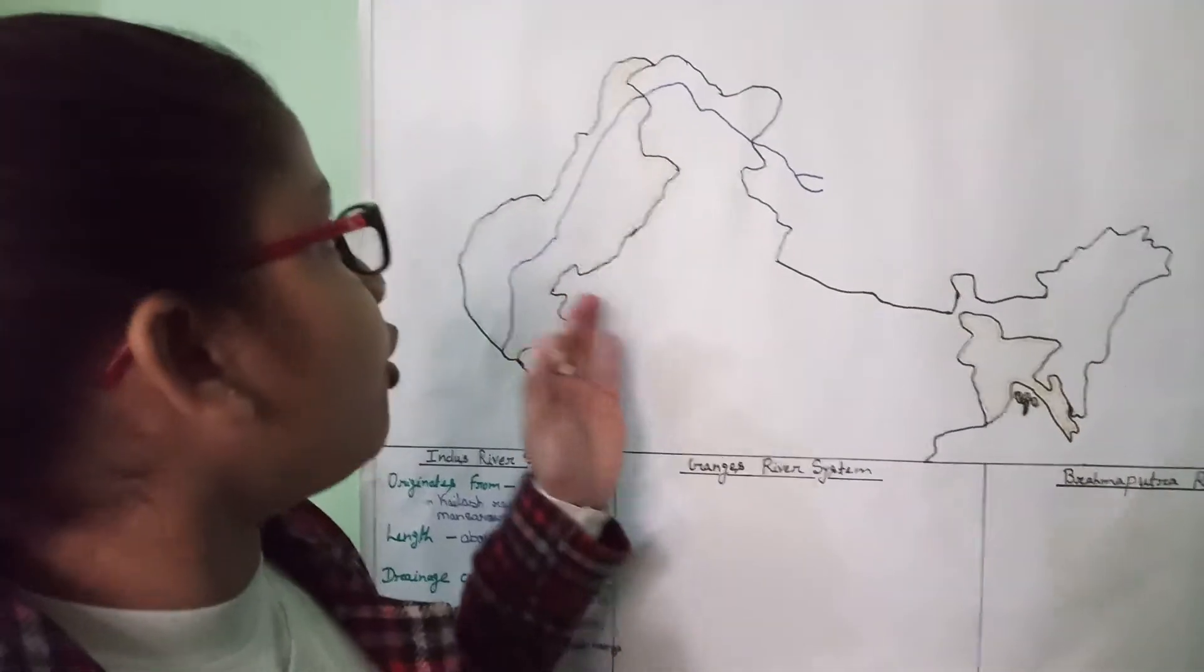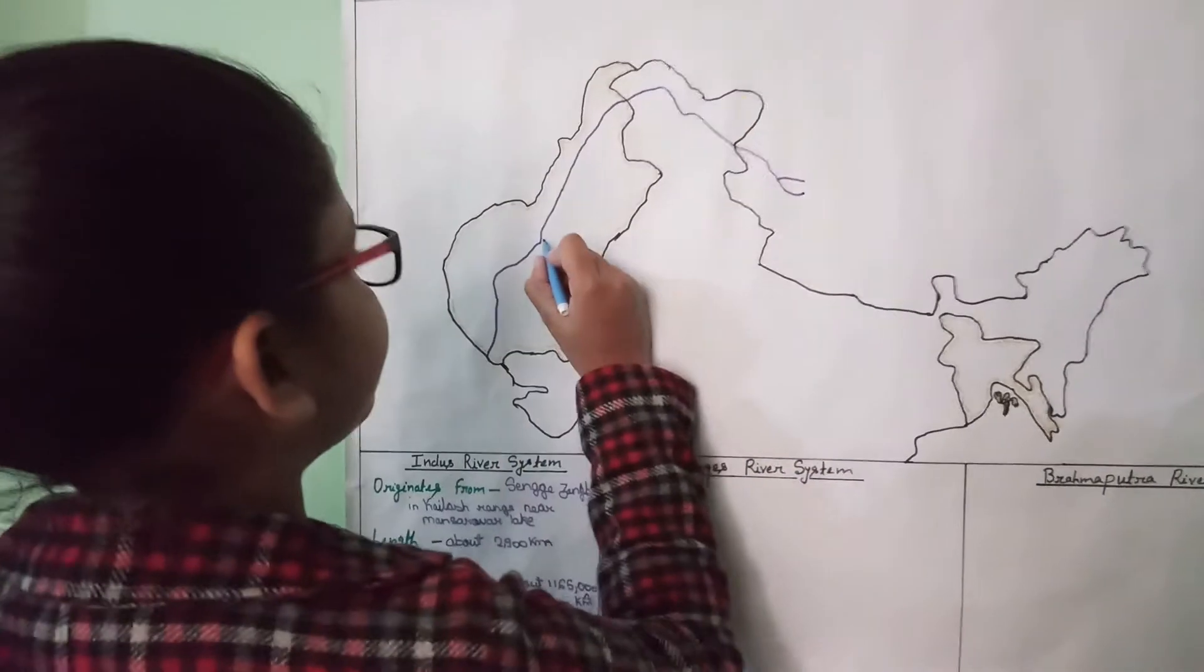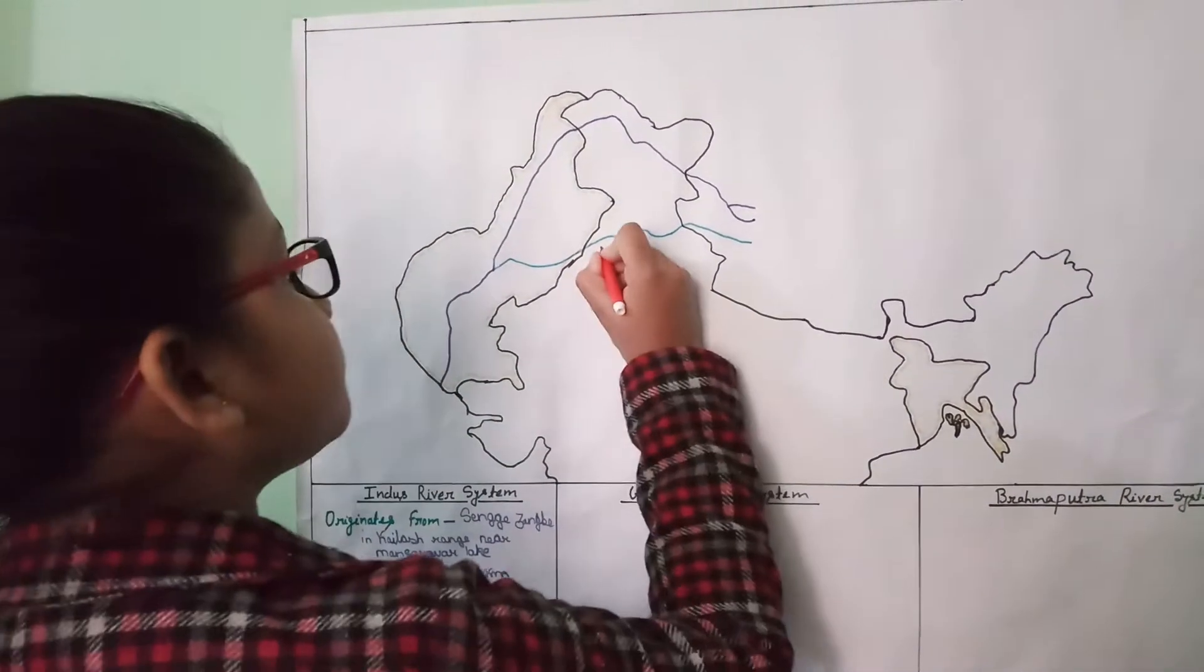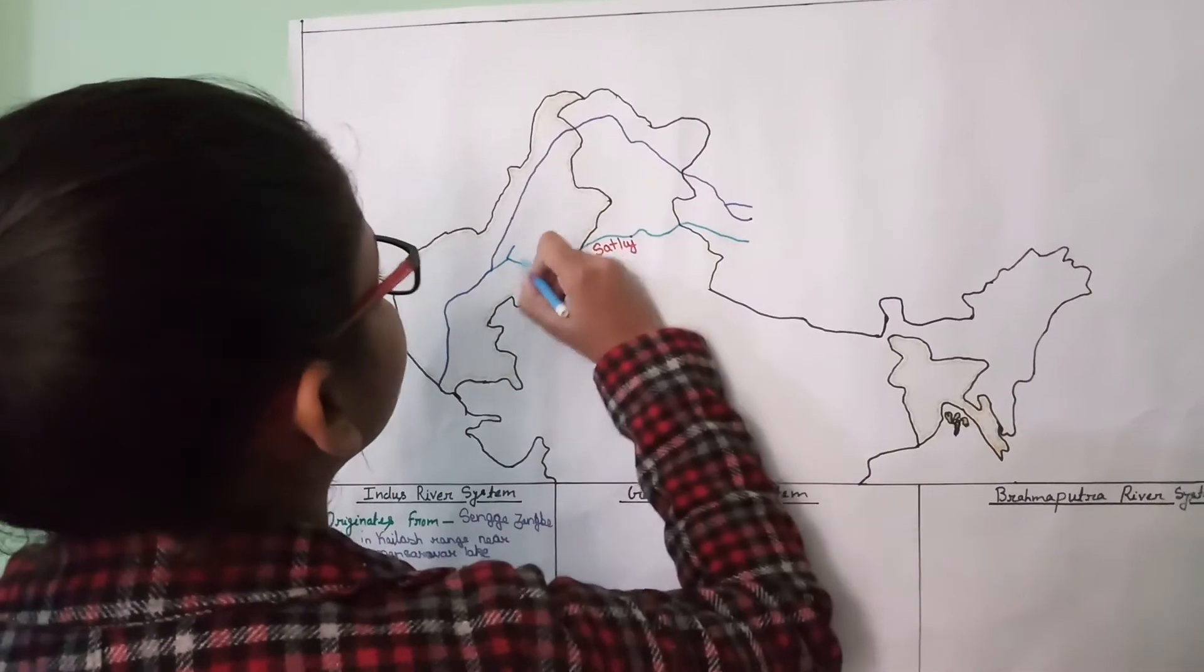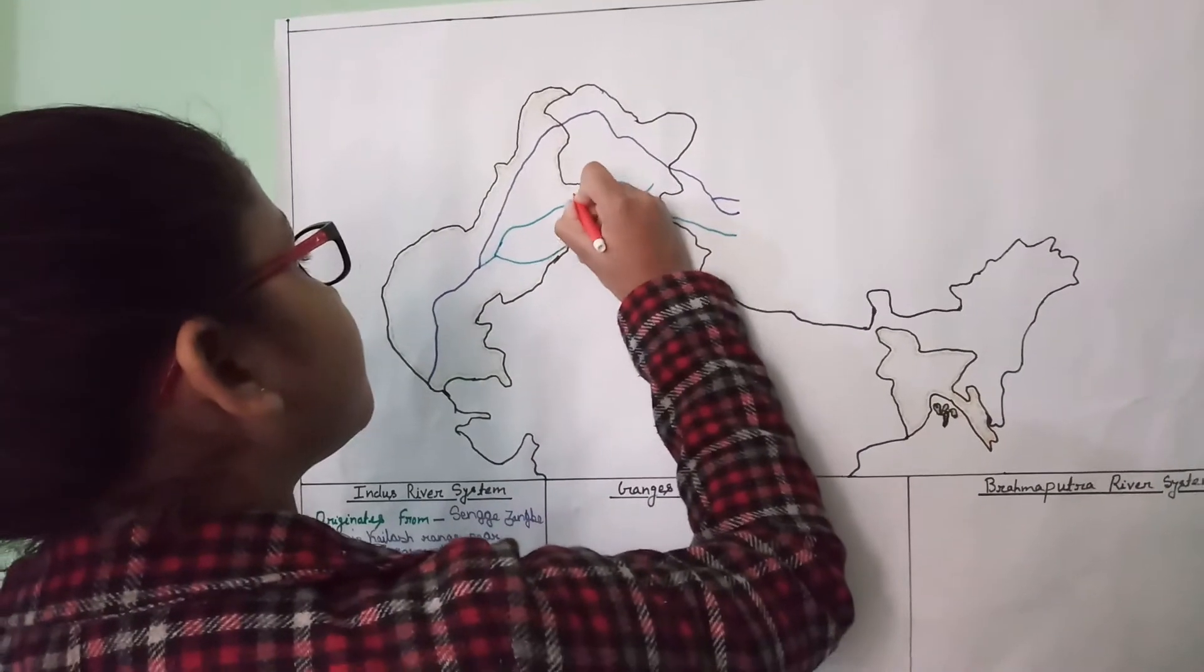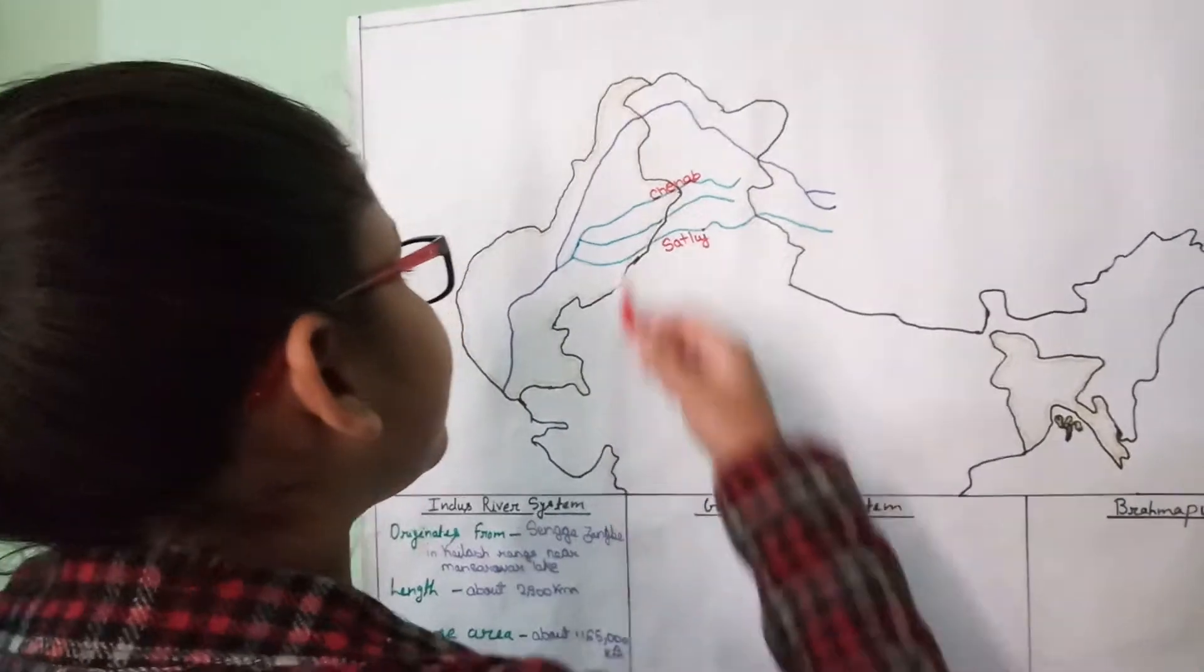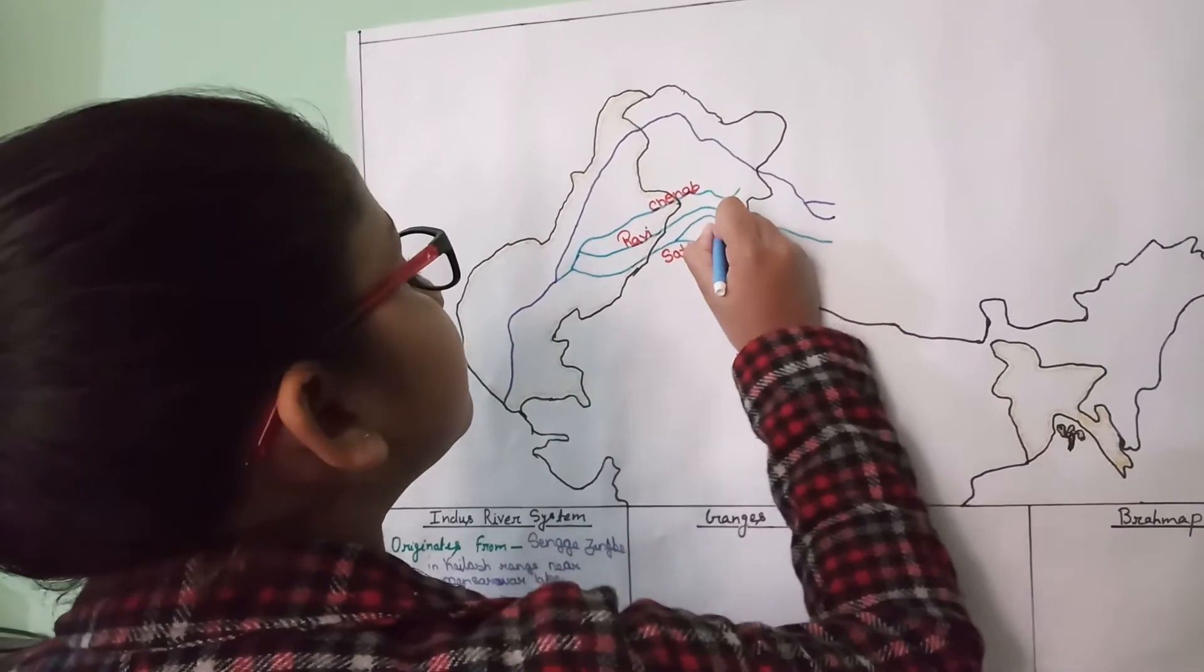So now we will go to the major tributaries of this river. So first, this is Satluj, and this is Chenab. Then this is Ravi, and this is Beas.